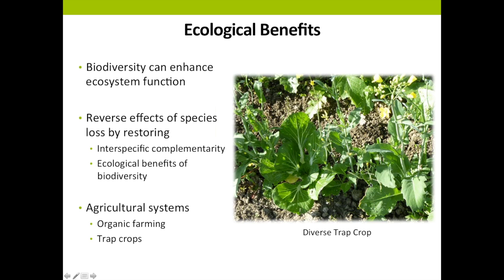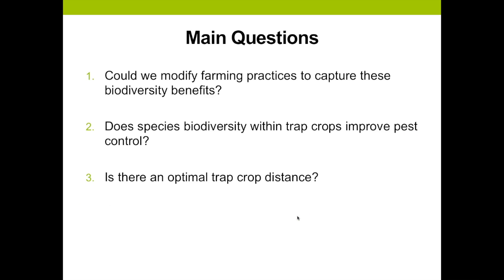Here is a picture of a diverse trap crop used to control flea beetles — you can see the different types of plants. This leads us to our main questions: Can we modify farming practices to capture these biodiversity benefits? While a trap crop serves to diversify plantings at the farm scale, it remains unclear whether diversity within the trap crop itself could further improve the effectiveness of this technique. Does species biodiversity within the trap crop improve pest control? We also looked at whether there's an optimal trap crop distance.